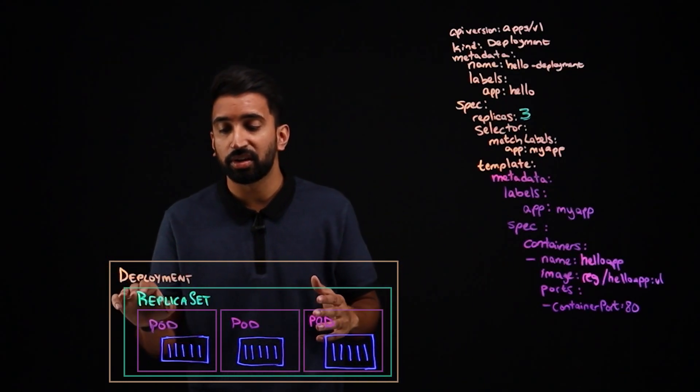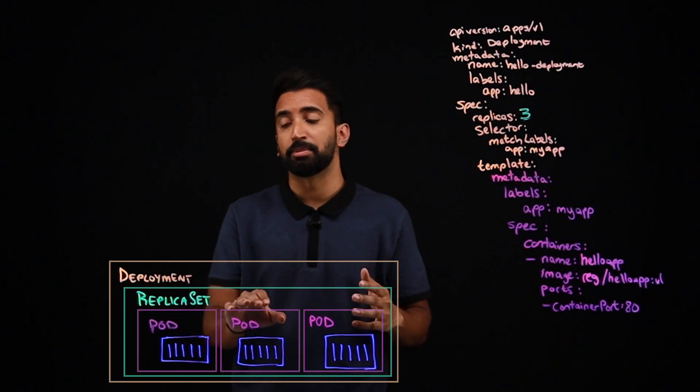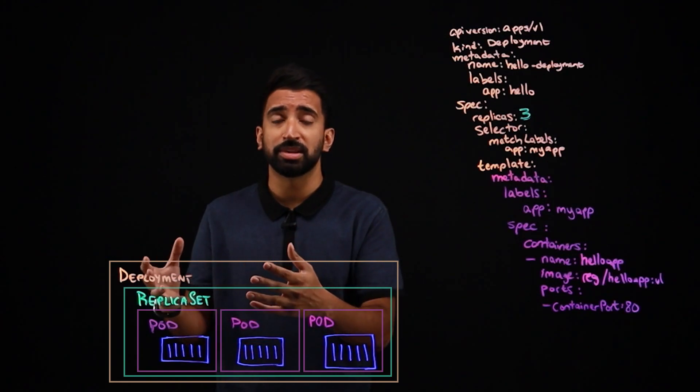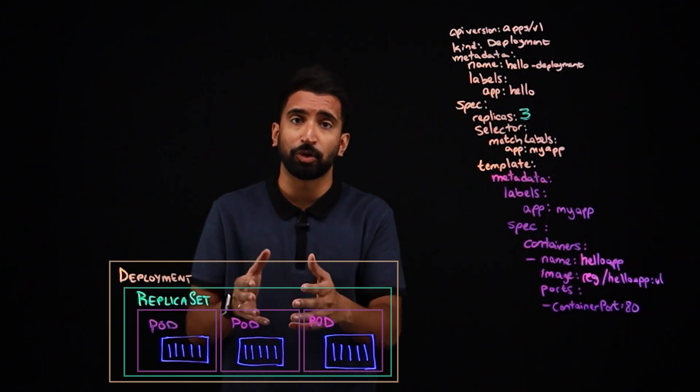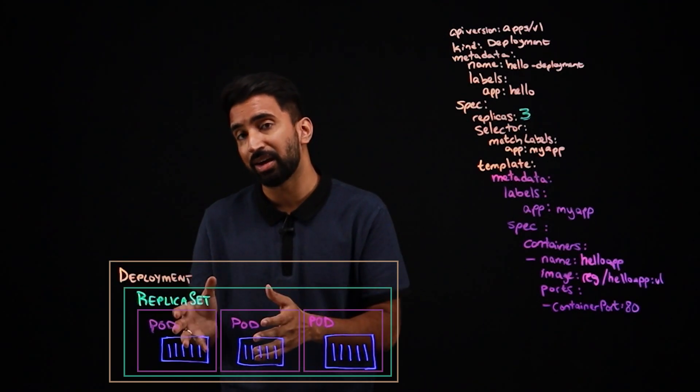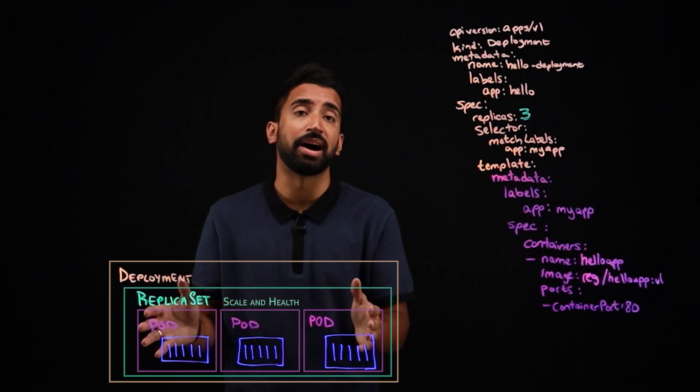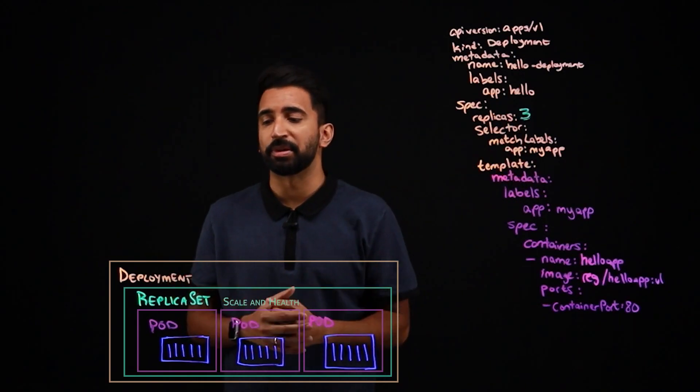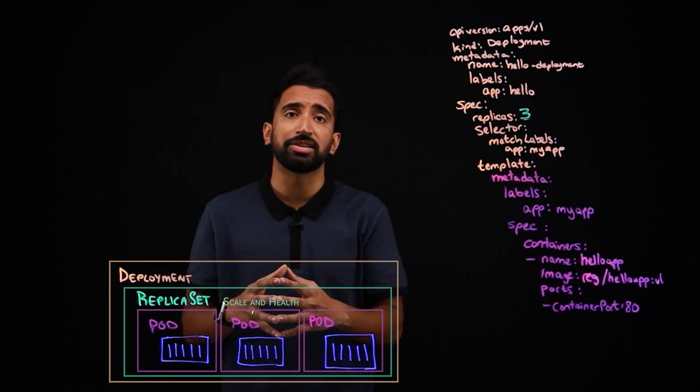But there's actually this other layer here between a deployment and the pods. Now generally, you wouldn't create replica sets manually, a deployment is going to automatically create a replica set for you. And this manages the scale and the health of the pods. In case one of them goes down, it'll bring up another. If you change the number of replicas, the deployment is going to get those advantages.